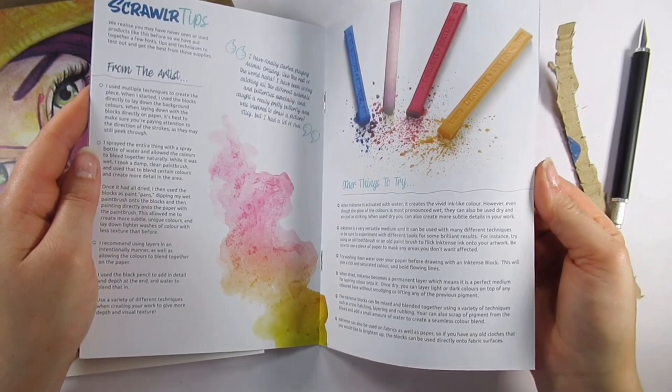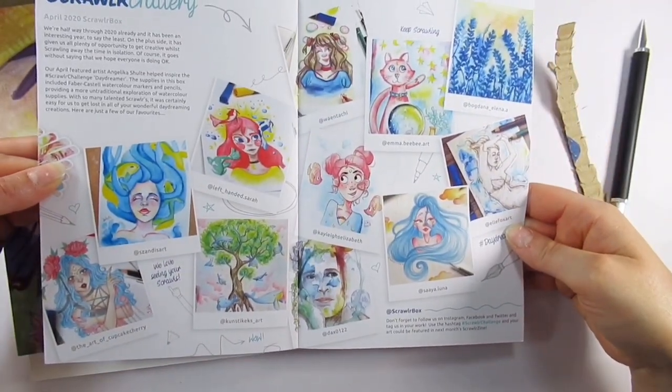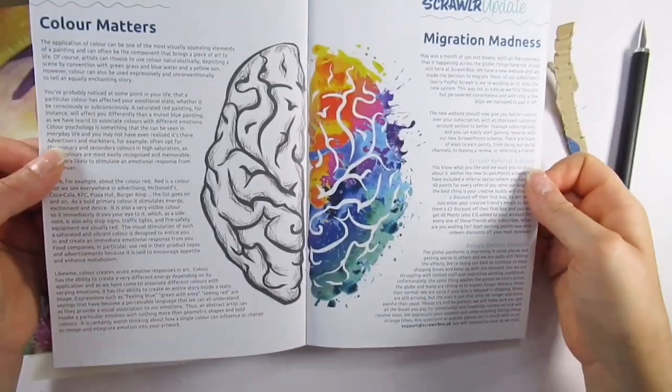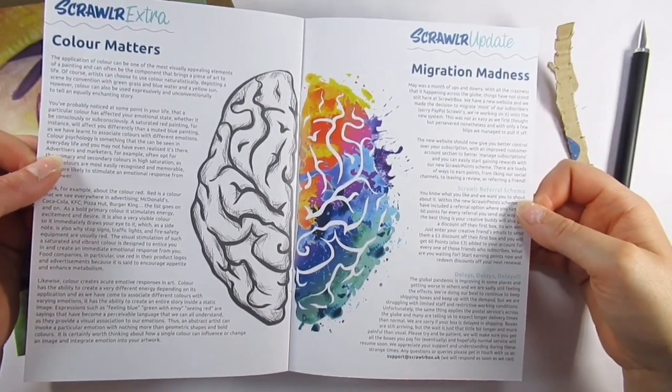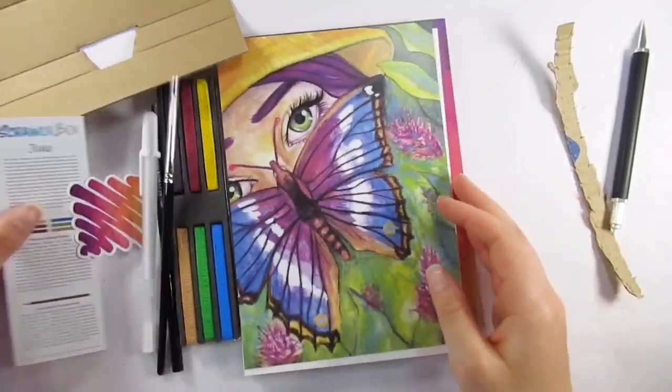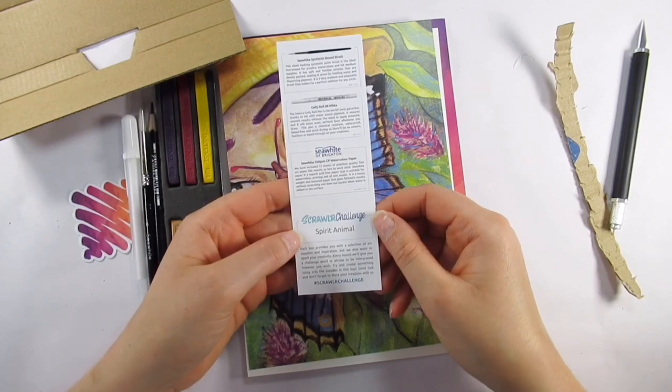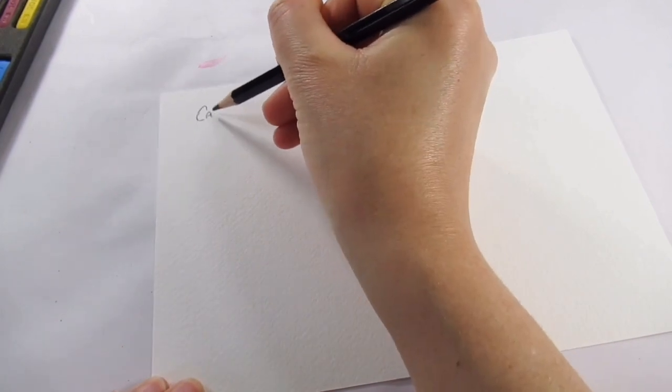We've also had the Scroller zine, and as well as that we had a Drumstick lolly chew which was well nice. Drumsticks are like one of my favorites growing up, so it was quite a nice nostalgic little chewy sweet. And of course, let's not forget the sticker that we got in this month's box which matches the color scheme and medium used by the artist.